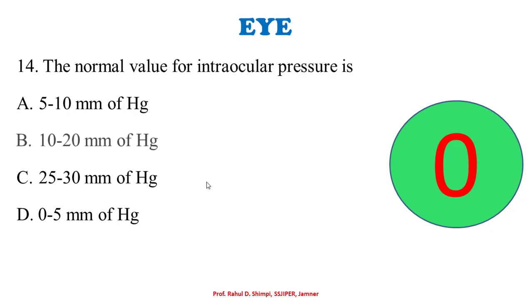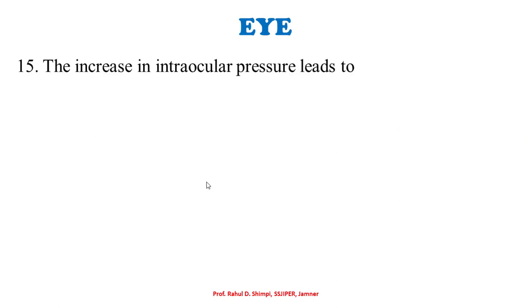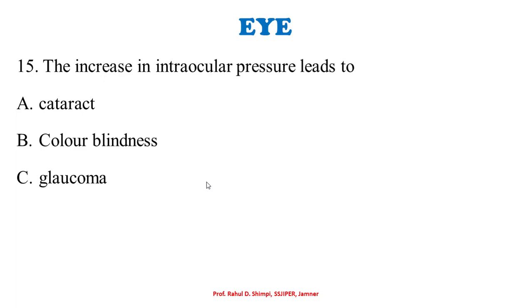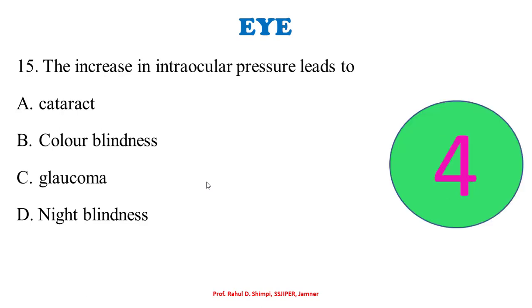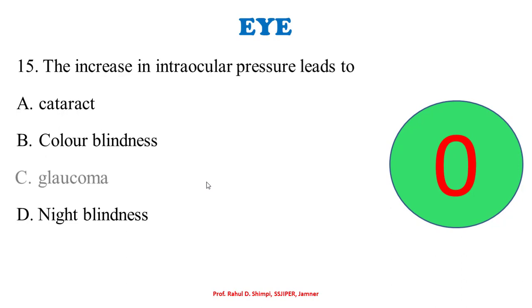An increase in intraocular pressure leads to a disease known as: A: cataract. B: color blindness. C: glaucoma. D: night blindness. The correct option is glaucoma. Whenever intraocular pressure exceeds the normal range of 10 to 20 mmHg, it leads to glaucoma, and if not controlled, it can damage the optic nerve and may lead to blindness.